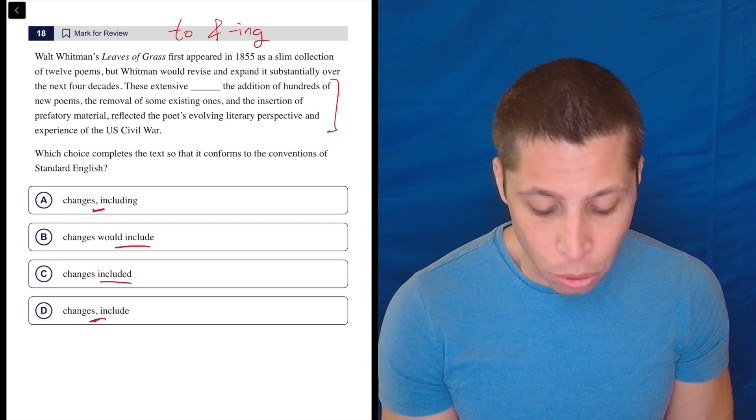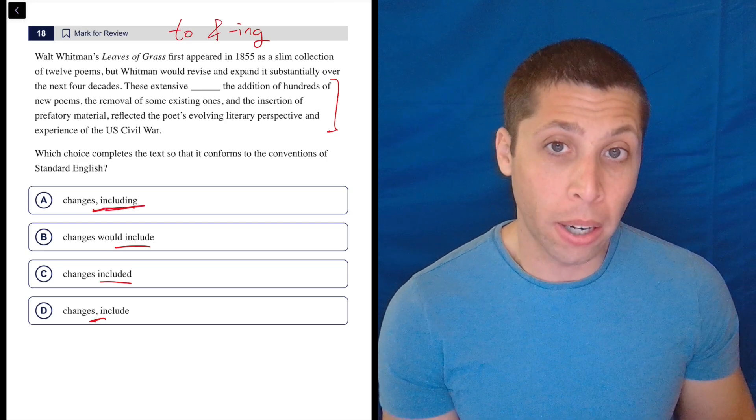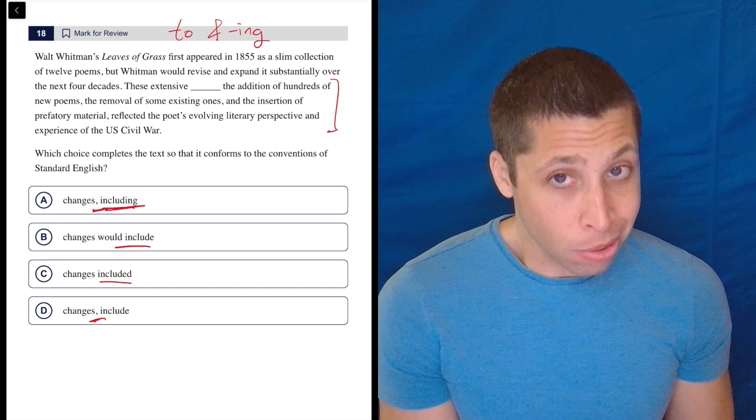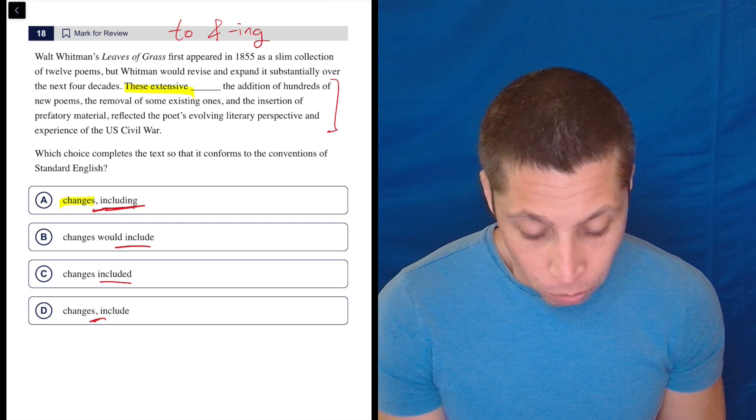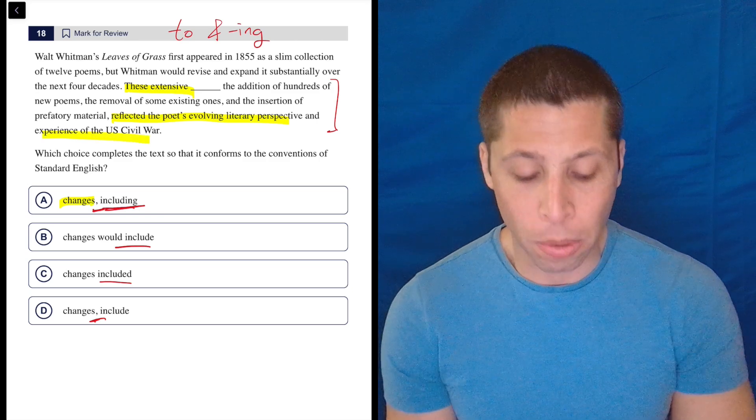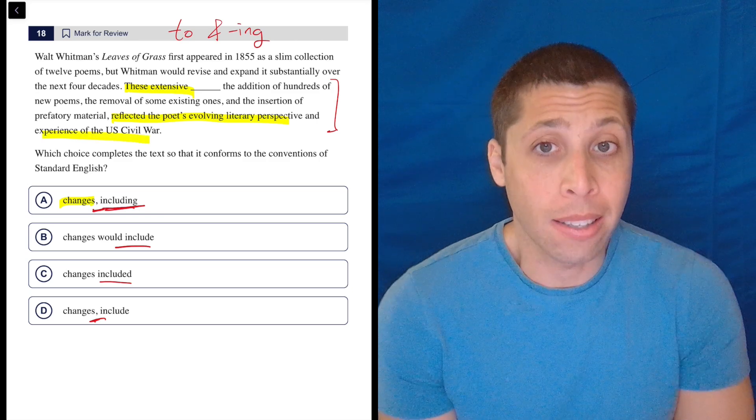And A is forcing me to make the 'including' part an extra clause, which sounds okay to me. Because then I'm saying: these extensive changes reflected the poet's evolving literary perspective and experience of the U.S. Civil War. That's the sentence.